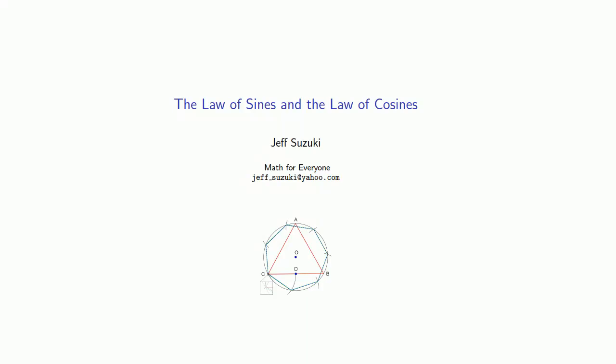Trigonometry is useful because it allows us to compute distances from angles, at least if we have a right triangle. But what if we don't? We can still use trigonometry by using what's known as the law of sines or the law of cosines.